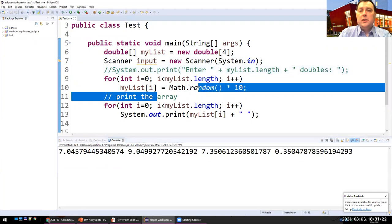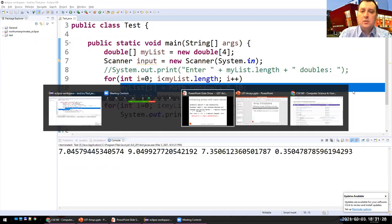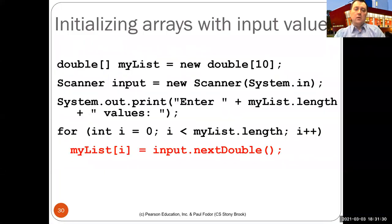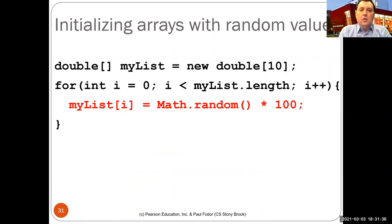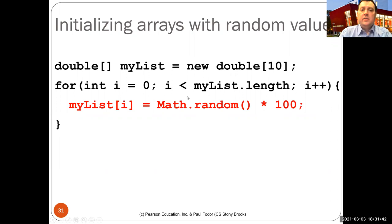Instead of reading from the user, you can generate random values. Using 'Math.random() * 10', you get random values between 0 and 10 (not including 10). Running it produces four different random values each time. This is also one of the problems in the second homework where you write a utility library for arrays.